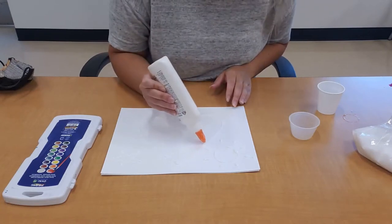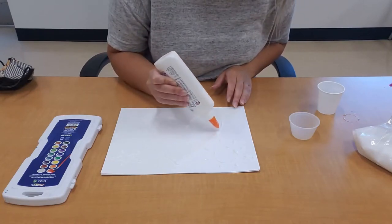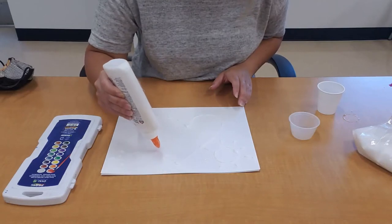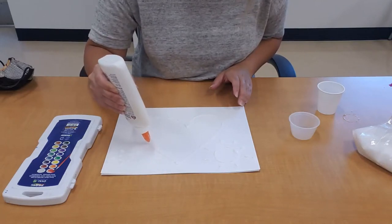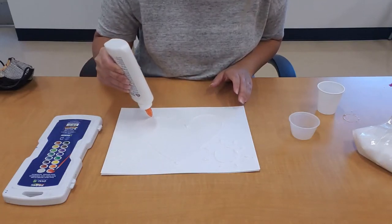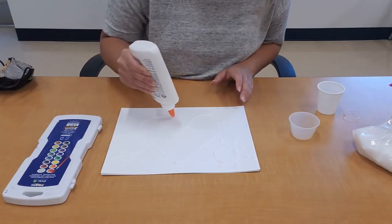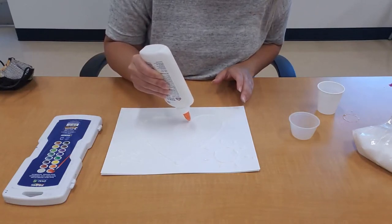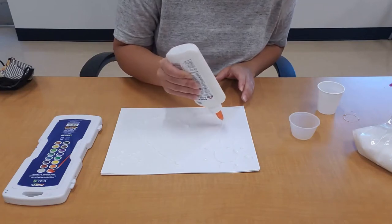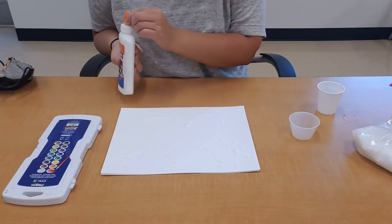All right, add in any places where you think the glue is missing. I want a nice thick line of glue. All right, that should do it.